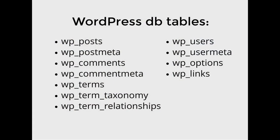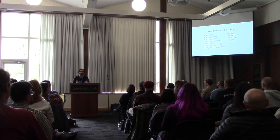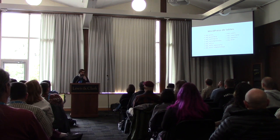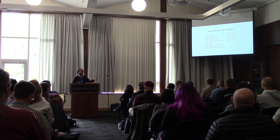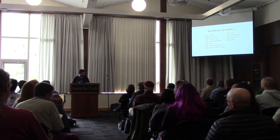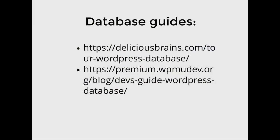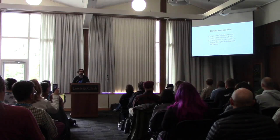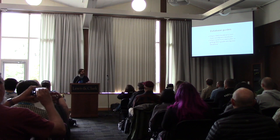Here are the WordPress tables that come with your site. Posts store your posts, users store your users, terms are for categories and tags, and post meta is for extra information — custom fields and things not in the ordinary columns of your post table. Your site may not use the WP underscore prefix; it can be customized. Good links to learn more: deliciousbrains.com and premium.wpmudev.org.